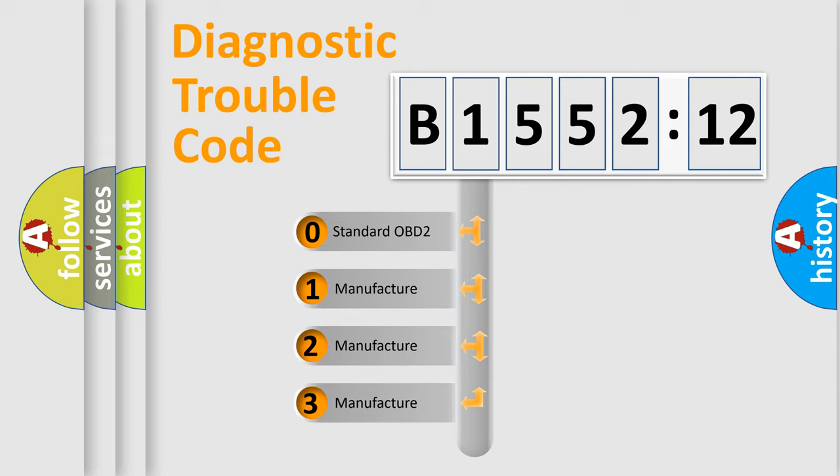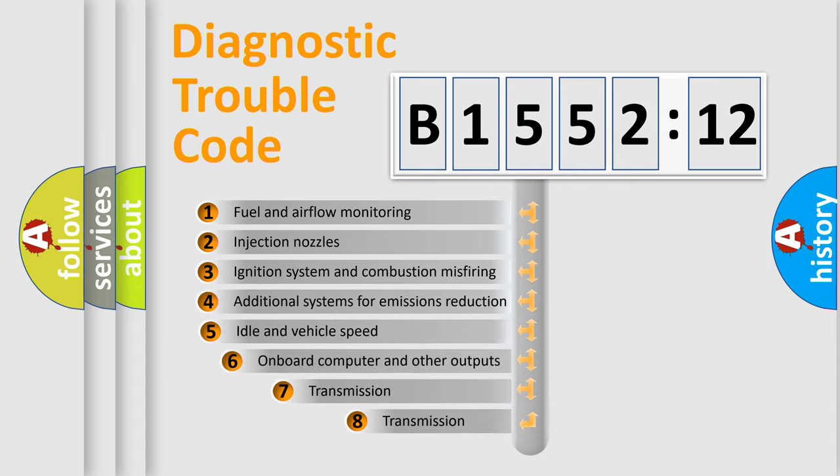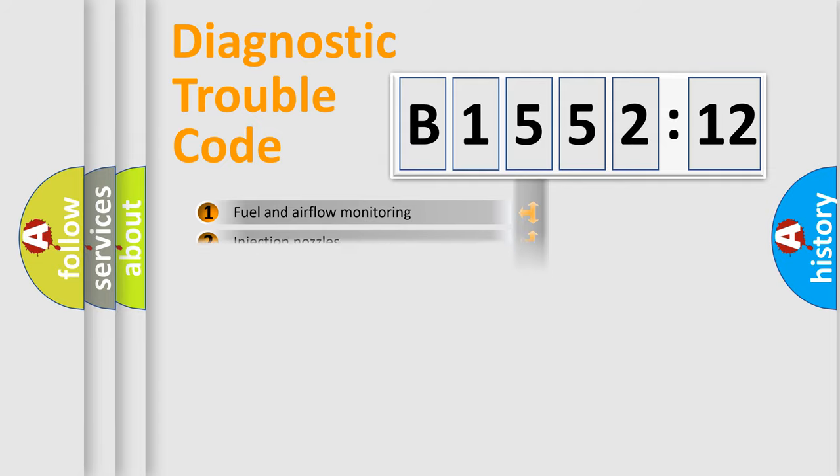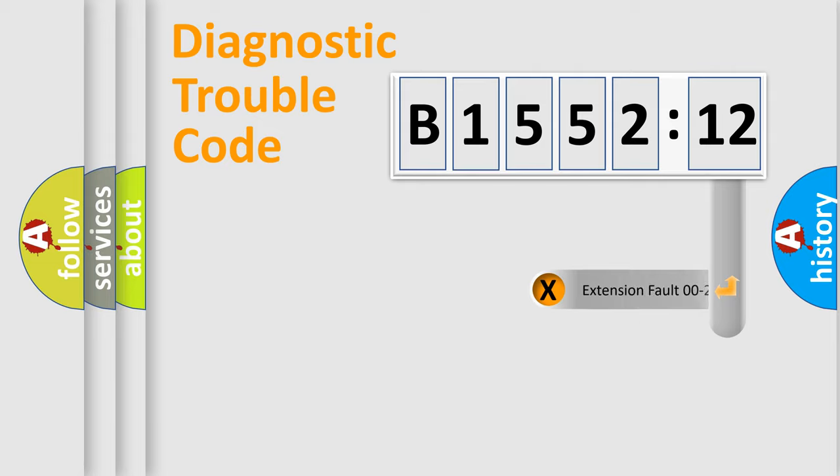If the second character is expressed as zero, it is a standardized error. In the case of numbers 1, 2, or 3, it is a more prestigious expression of the car-specific error. The third character specifies a subset of errors. The distribution shown is valid only for the standardized DTC code.